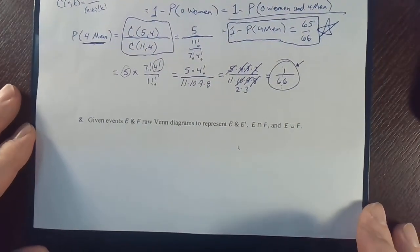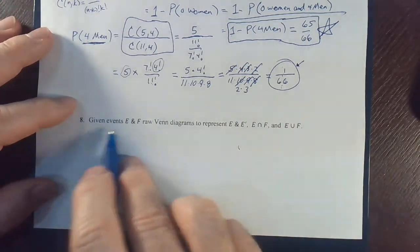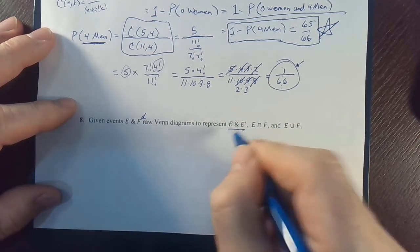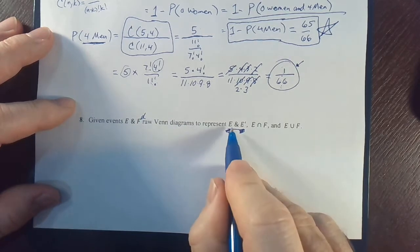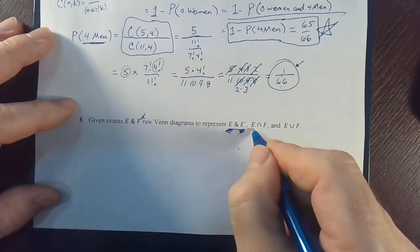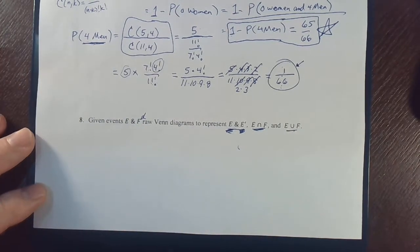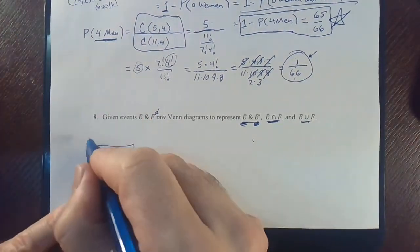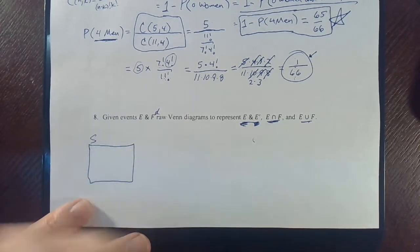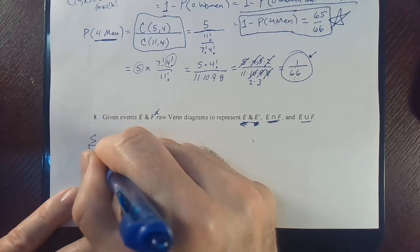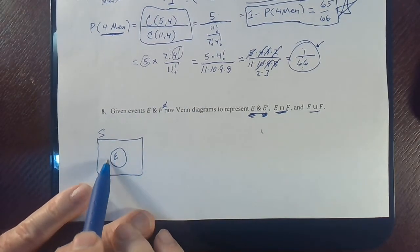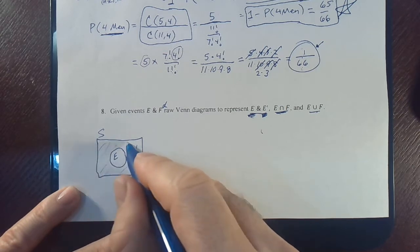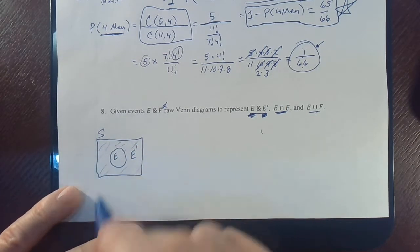Number eight — I think we've done something like this before, but let's do it again. Given events E and F, draw Venn diagrams. For the first one — E and E complement — this is the entire sample space. I only need one circle: that's the set E. Everything outside the circle is E complement, which I'll shade in. Inside the circle is E, outside is E complement.